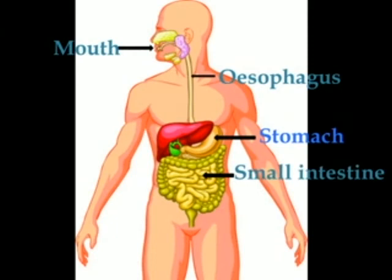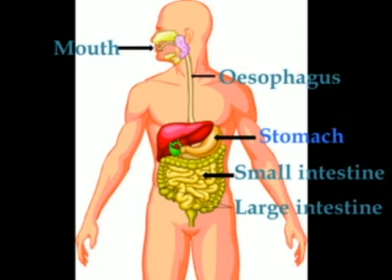Small intestine, which is a very long narrow tube-like structure. From the stomach, food comes into the small intestine. Then the large intestine — from the small intestine, the undigested part of the food passes into the large intestine. Then the rectum, which is a part of the large intestine.